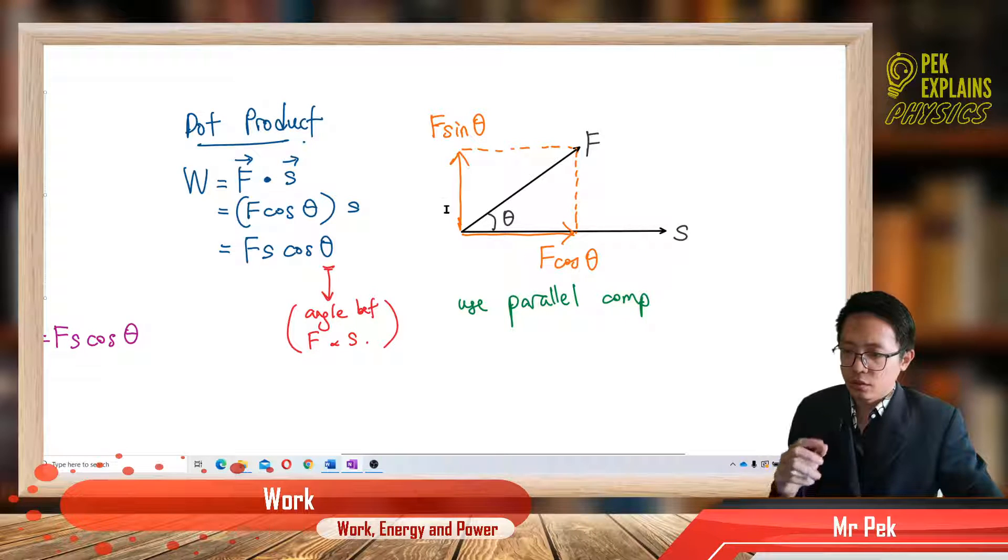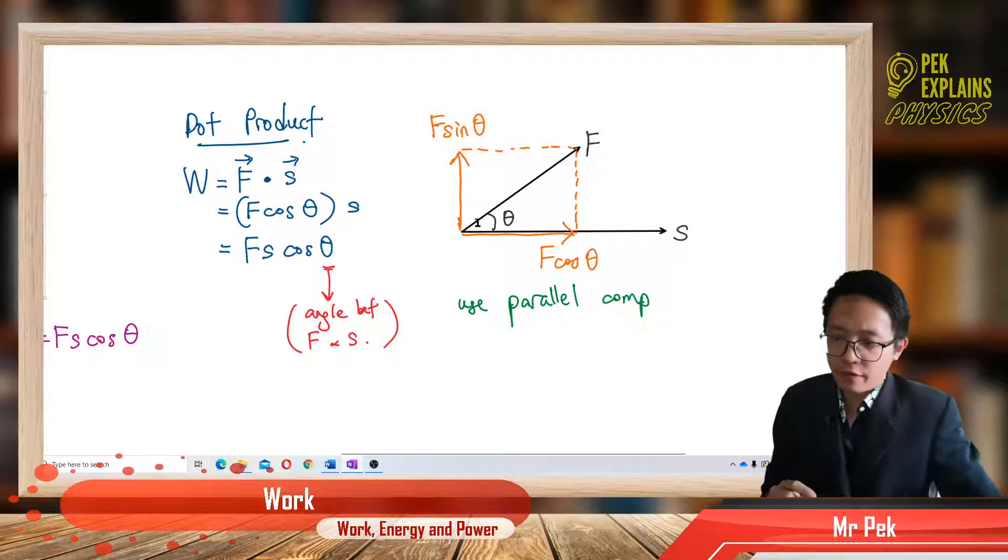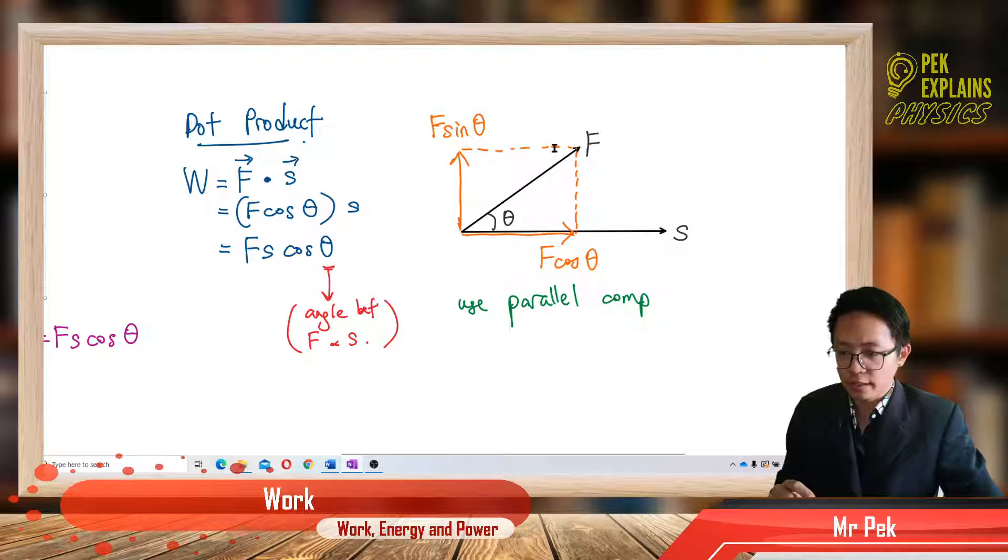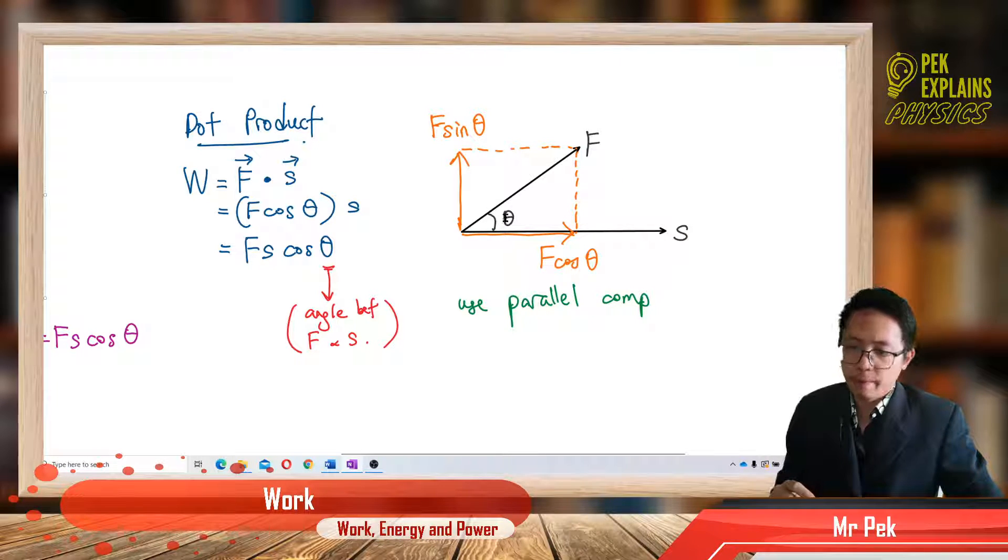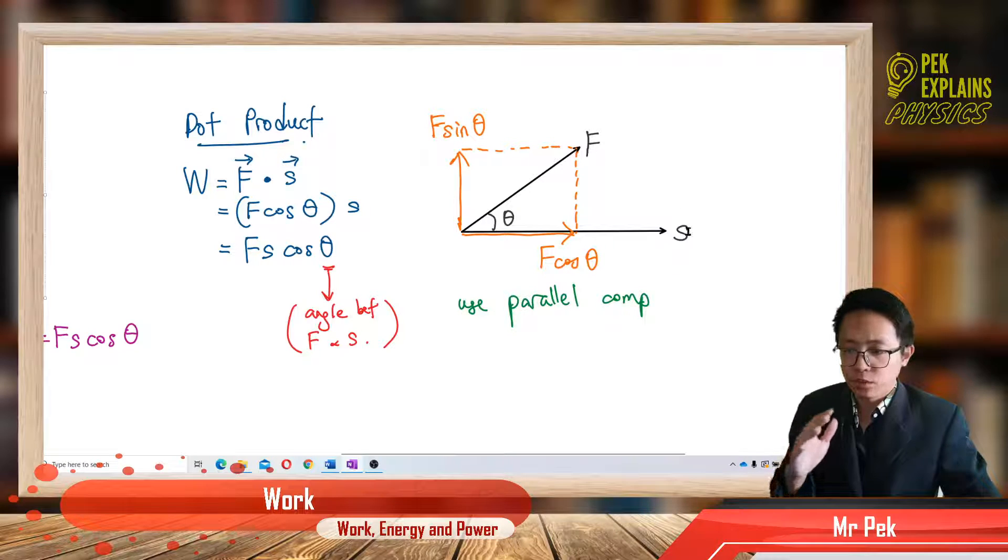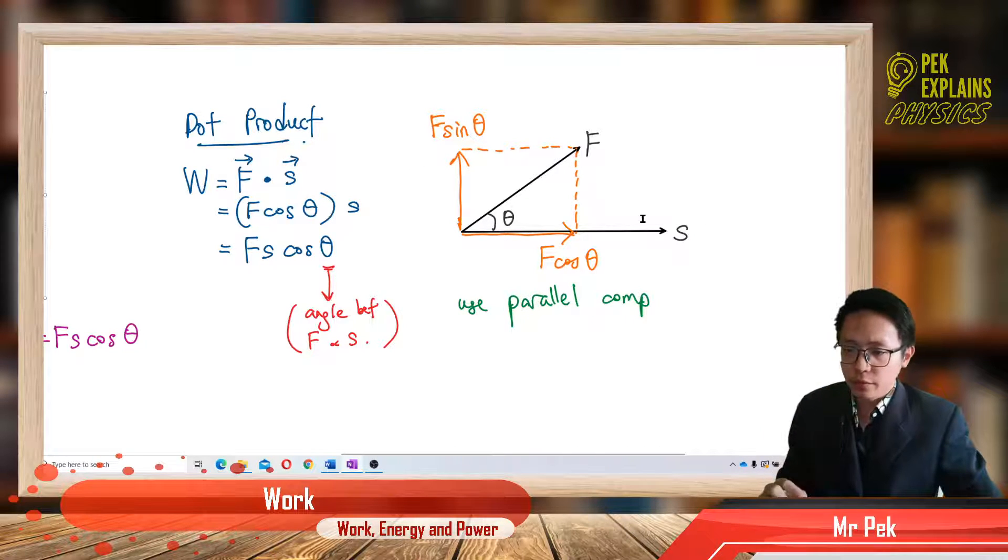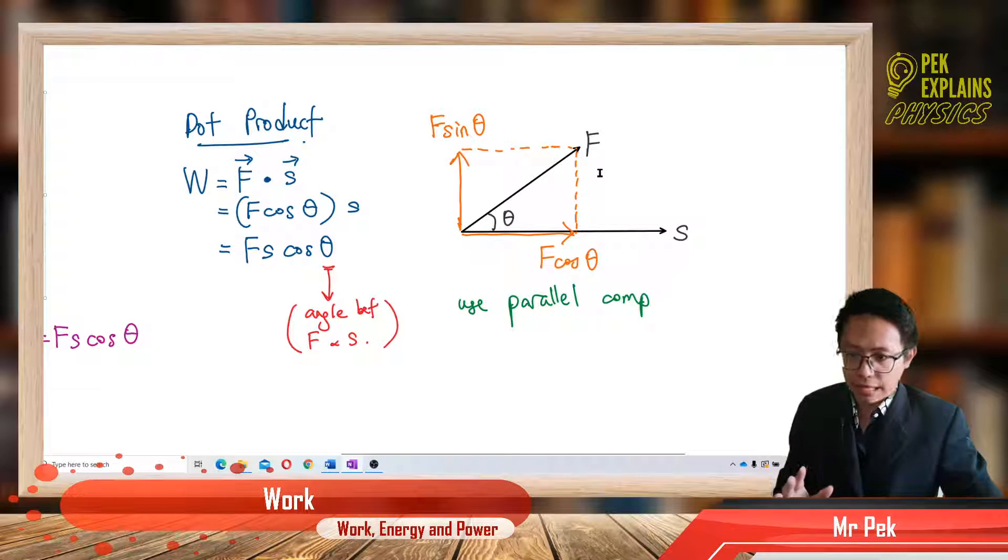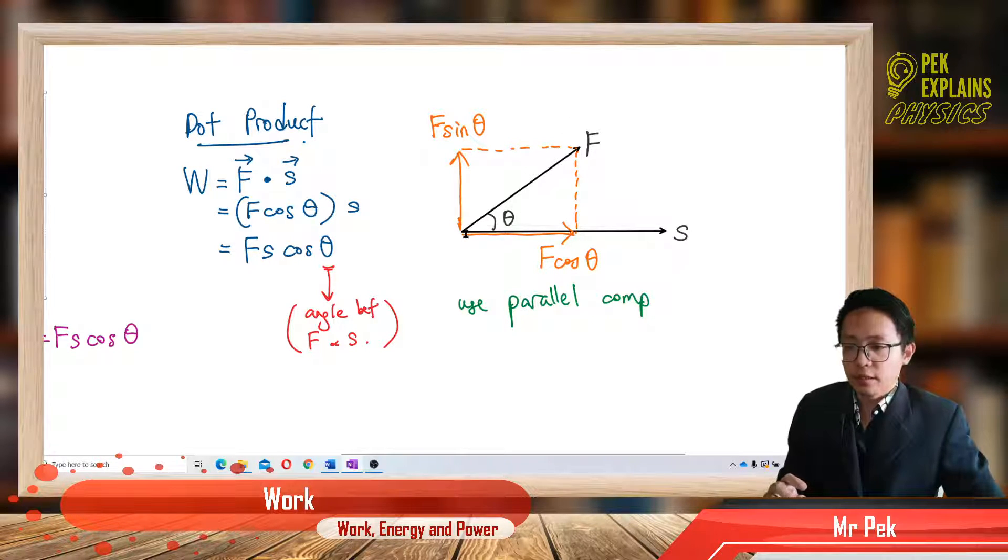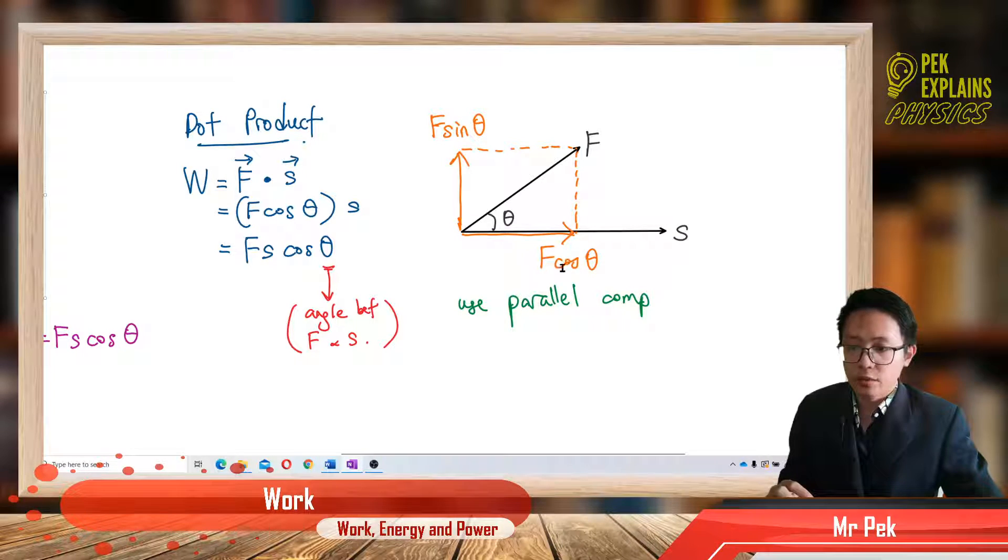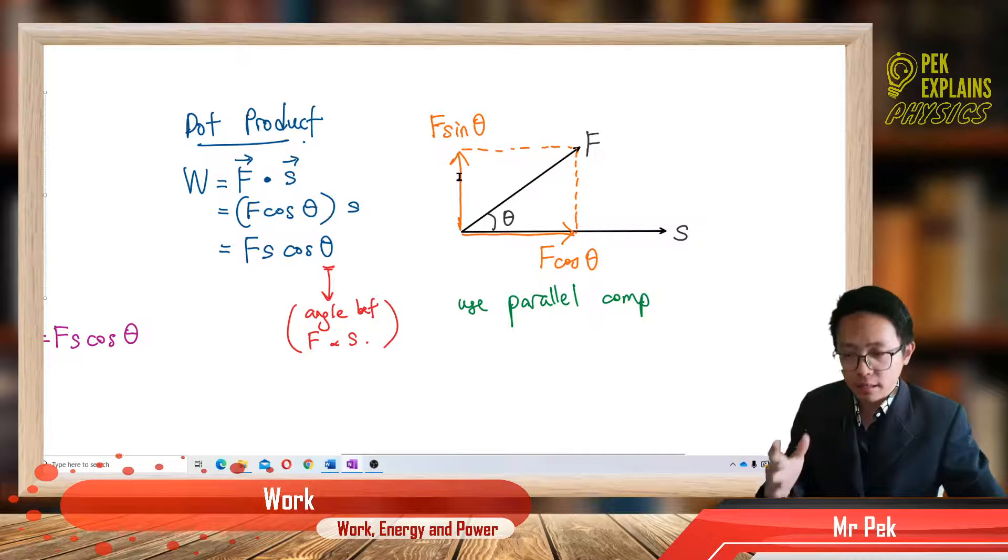If we have the force and displacement, these two vectors, separated by angle theta, and we want to multiply these two vectors together, we use dot product. Before we can multiply, we must first resolve the force into two components.